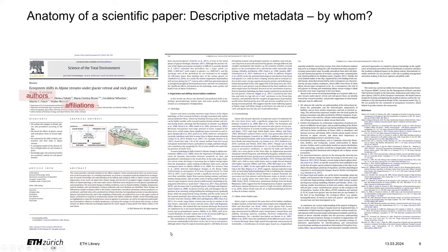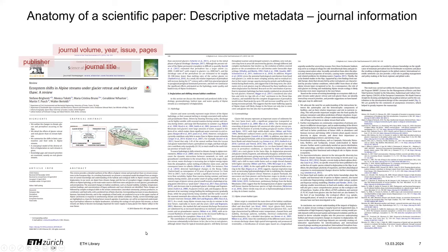Then of course it's the question: by whom? The authors and the affiliations give information on who has contributed to the paper and from which universities or institutions these authors come from. Furthermore there is information about the journal — the journal title, the volume, year, issue and the pages — which gives information on where and when the paper was published.